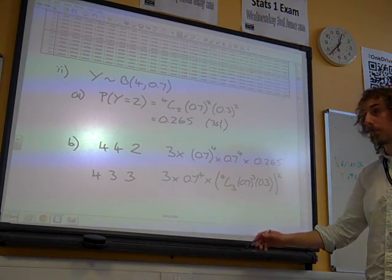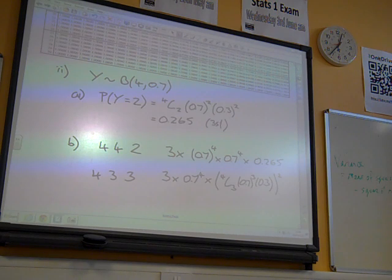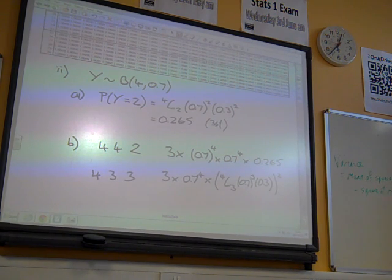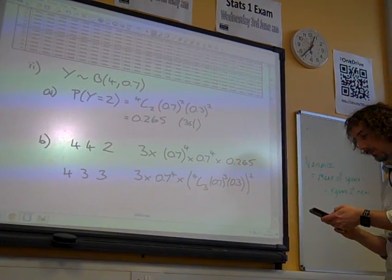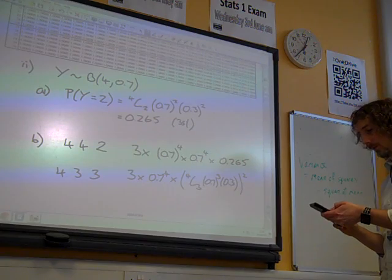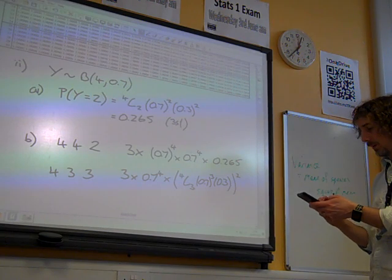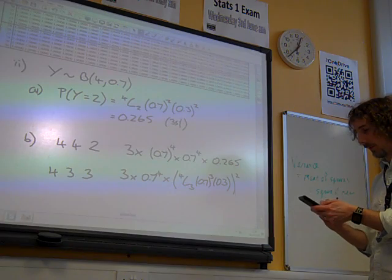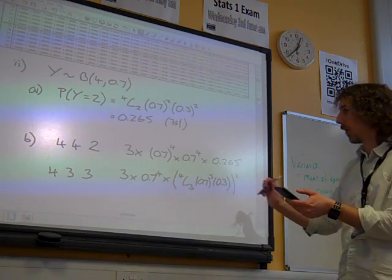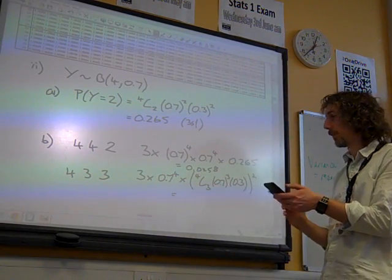I've got to add together these two numbers. Now, what have I got out of all of this? I'd better actually work some of these things out. Right, so what am I getting? 3 times 0.7 to the 4 times that one. So I've just got that as being 0.0458.